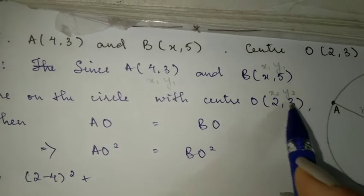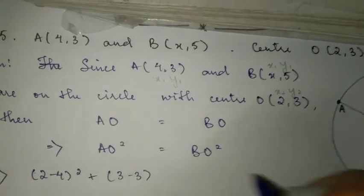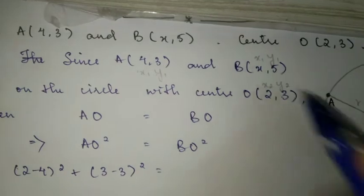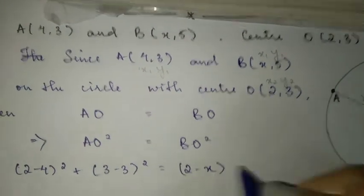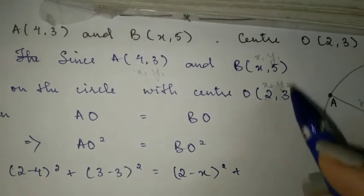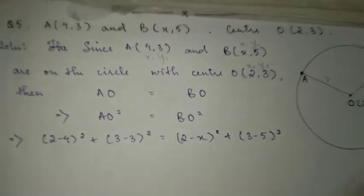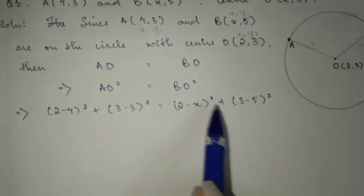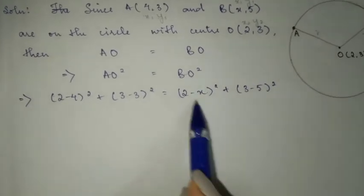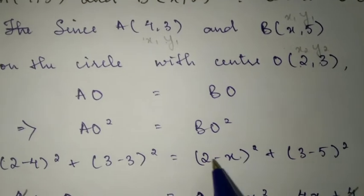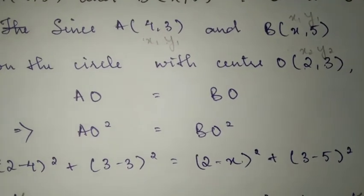Substitute and simplify. Here we have 3 minus 5 whole square. Expand using (a minus b) whole square formula, then split the middle term to find the x value.